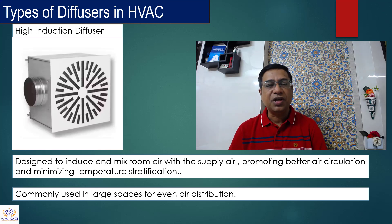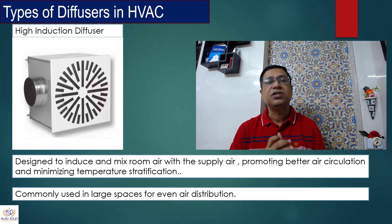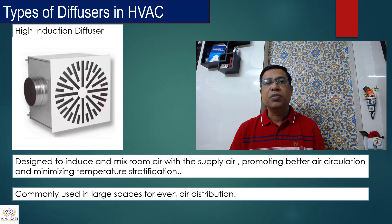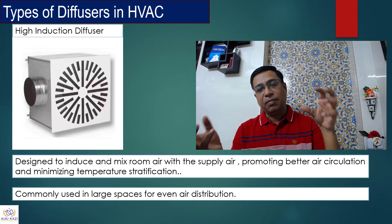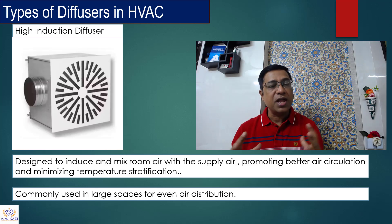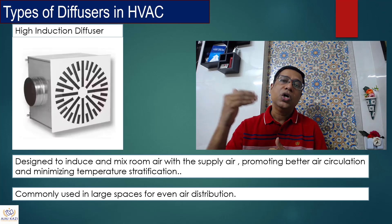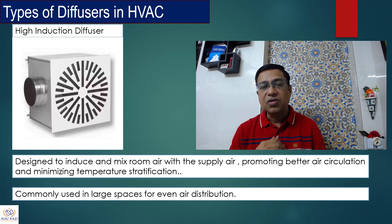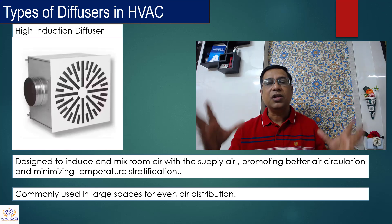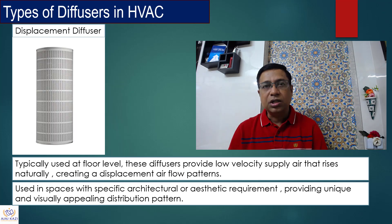High induction diffusers, as you can see from the image here, are designed to induce and mix room air with the supply air. Within the room, it takes the room air, combines it with the supply air, and actually promotes better air circulation and minimizes temperature stratification. This is why induction diffusers are commonly used in large rooms and large areas where you want to condition the air — you can use multiple of those and get a better cooling or conditioning effect.